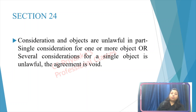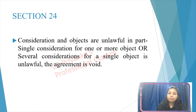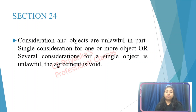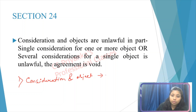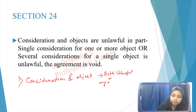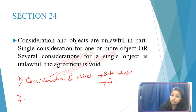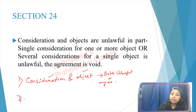Coming to section 24. Section 24 is telling: consideration and objects are unlawful — in part, a single consideration for one or more objects, or several considerations for a single object, is unlawful. You can write along with me: consideration and object — both unlawful, or anyone unlawful. Whenever you are entering into an agreement and either the consideration or the object is illegal or unlawful, or both are unlawful, then your agreement is void.